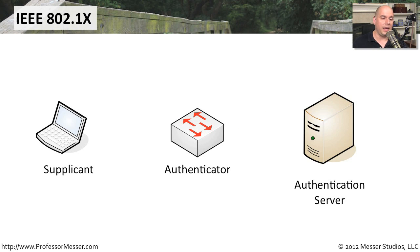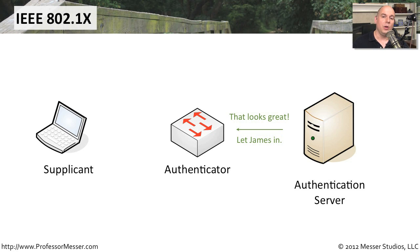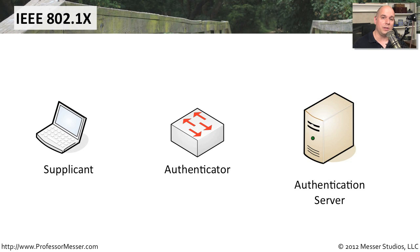At that point, the authentication server confirms the user is allowed onto the network and sends that approval to the authenticator, which then notifies the workstation that access is granted. The ports begin to open up. The authenticator lets the network know the user is authenticated, the switch port is enabled, and the device may even be moved to a particular VLAN.